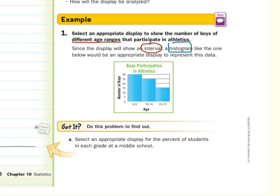And so now we're asked, select an appropriate display for the percent of students in each grade at a middle school. Well, here I lock into percent. And for percents, our circle graph compares parts of the data to the whole. You know, 10% is 10, that part over the whole, 10%. So I would use for this one, a circle graph.